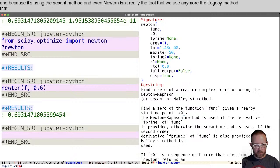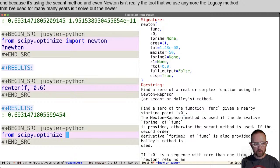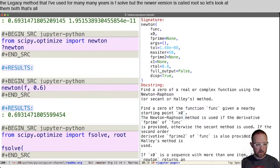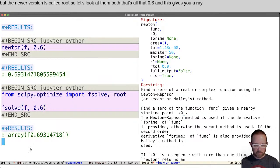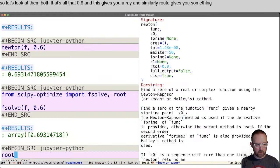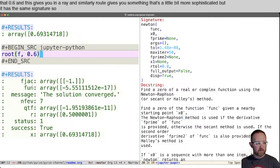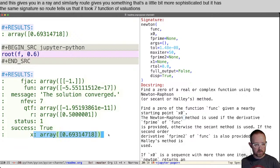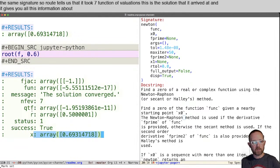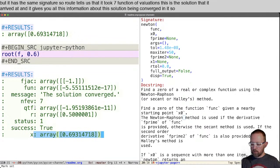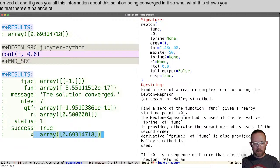And even Newton isn't really the tool that we use anymore. The legacy method that I've used for many years is f solve, but the newer version is called root. So let's look at them both. f solve f 0.6 and this gives you an array and similarly, root gives you something that's a little bit more sophisticated, but it has the same signature. So root tells us that it took seven function evaluations. This is the solution that it arrived at and it gives you all this information about the solution being converged and so forth.